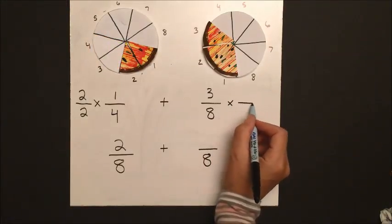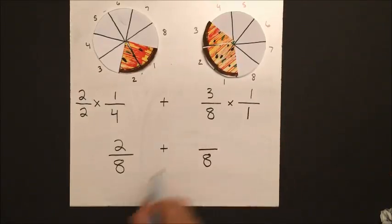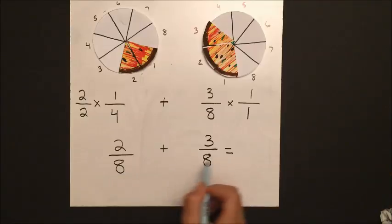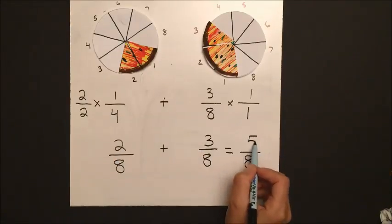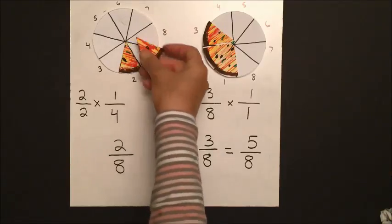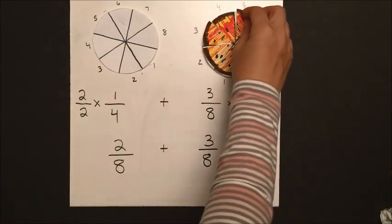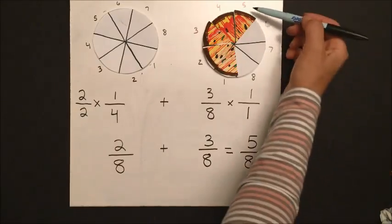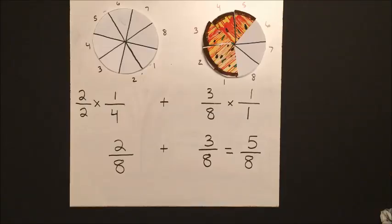Our second pizza also needs to be compared, so we're going to have eight as a denominator and five as our numerator. And if we take those two pieces again over to our second pizza, we can easily see that when we add them all together, we have five out of the eight total slices.